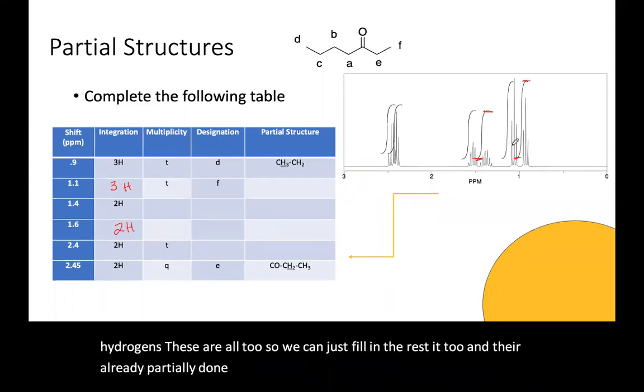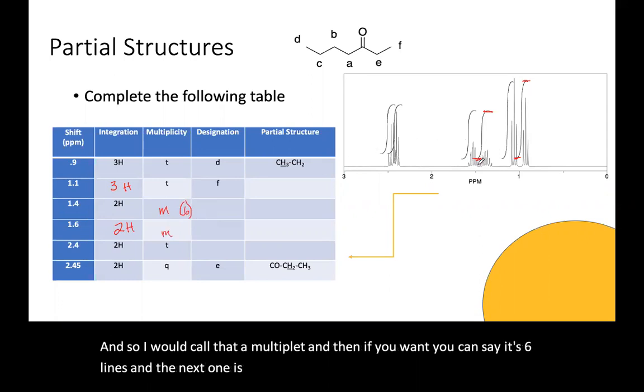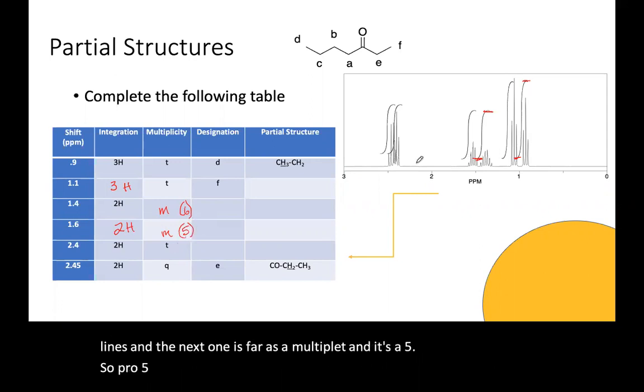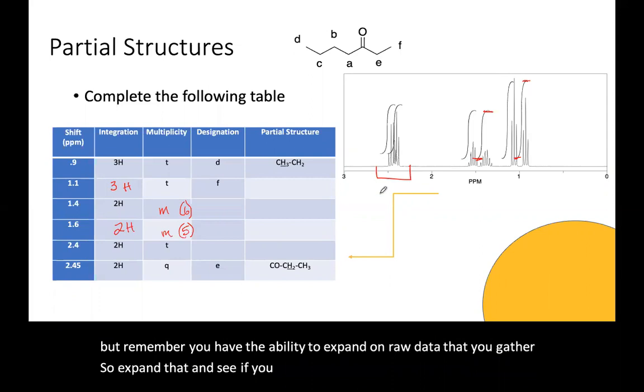Then triplet, triplet, beautiful, right? Then we've got one, two, three, four, five, six. And so I would call that a multiplet. And then if you want, you can say it's six lines. And the next one is five, as a multiplet. And it's five. So we'll put a five there. And then this is hard to tell from this particular spectrum. But remember, you have the ability to expand on your raw data that you gather. So expand that and see if you can separate out those two peaks.